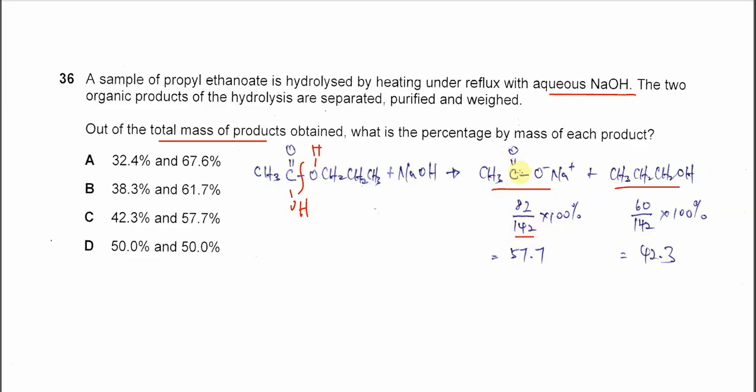So for this salt, you just need to use 82 over the total mass of products times 100. You get 57.7.